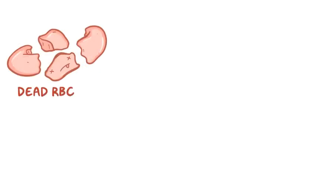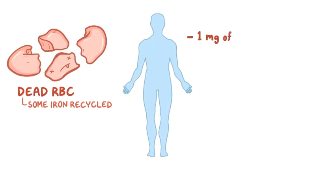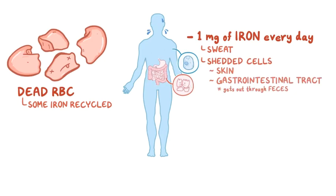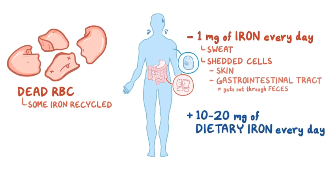Now normally, when a red blood cell dies, some iron is recycled from it. But we also lose about a milligram of iron every day — some through sweat, some shed in skin cells, and some shed in cells in the gastrointestinal tract, which exit the body through feces. Most of us take in around 10 to 20 milligrams of dietary iron every day and absorb about 10% of it, or about 1 to 2 milligrams, so it all evens out at the end of the day.